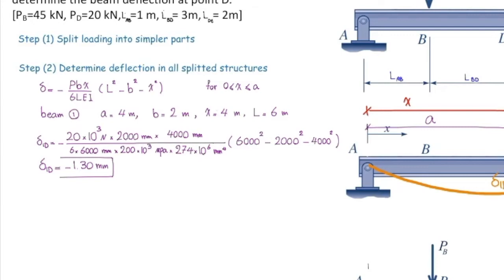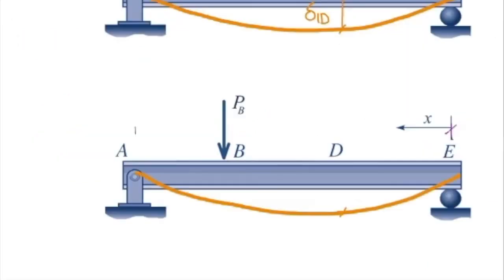Now listen very carefully to the second part, because this is the tricky part. Now we want to determine deformation in the second beam. This is how this beam deforms. Where do I need to determine deformation? At point B or D? At D. Because this is the point that I want to determine the overall deformation in the original beam. So this is what I'm looking for. Delta 2D.